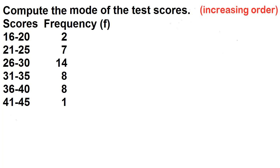Compute the mode of the test scores. To compute the mode, use this formula. Mode is equal to the lower boundary of the modal class plus the quantity d sub 1 over d sub 1 plus d sub 2 times the class width.